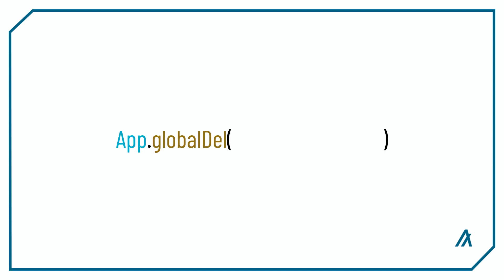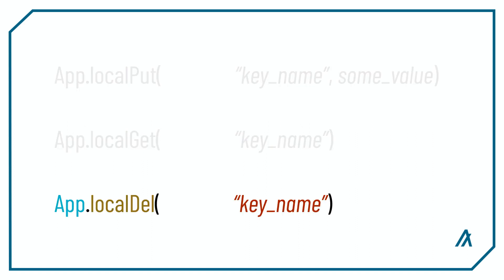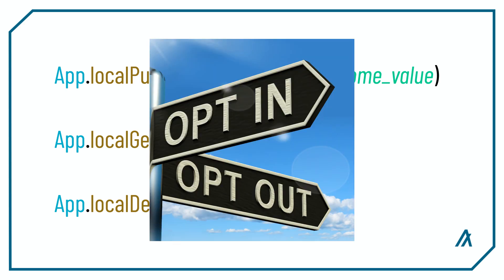To delete a global state, you use the app.globaldel operation and pass in the state key as an argument. It's pretty much the same with local state — these are the three operations to write, read, and delete local states. For all of these operations, the first argument is the account address that is accessing and manipulating the local state. A key difference with local state is that the account must opt into the smart contract to allow the contract to write local state on the account.